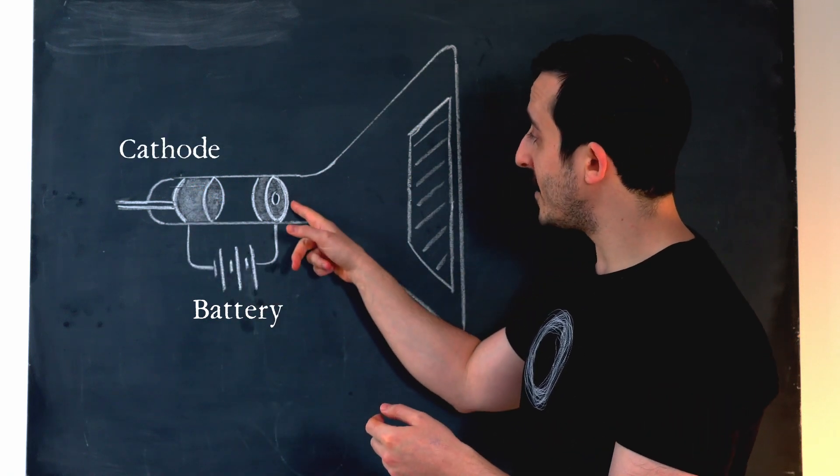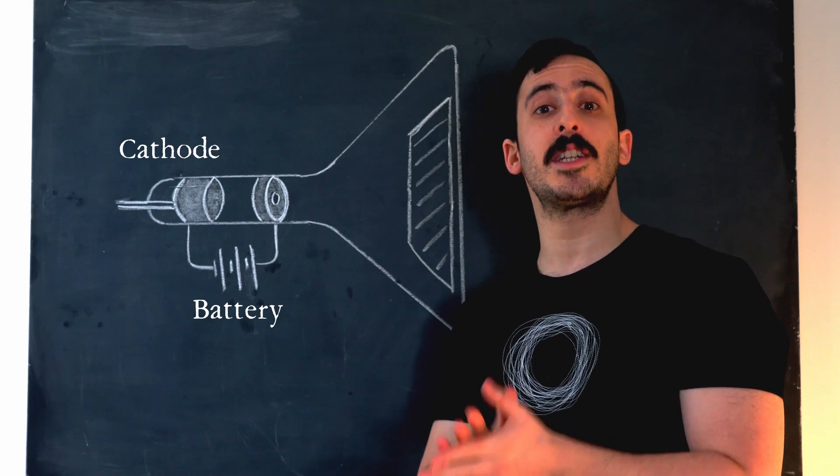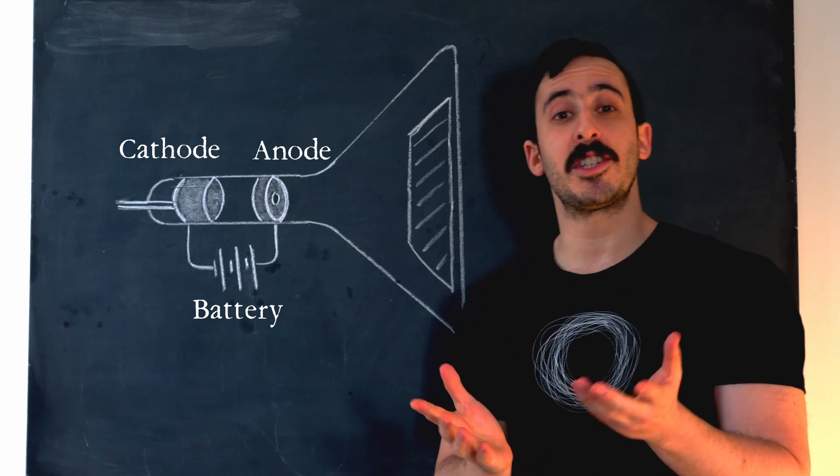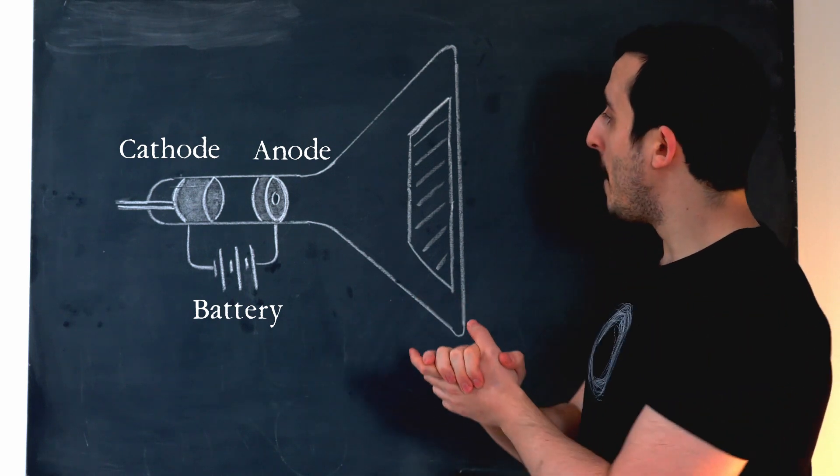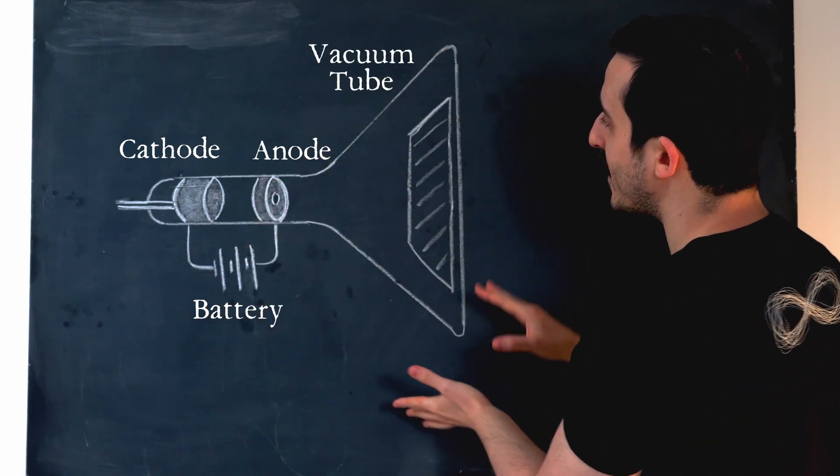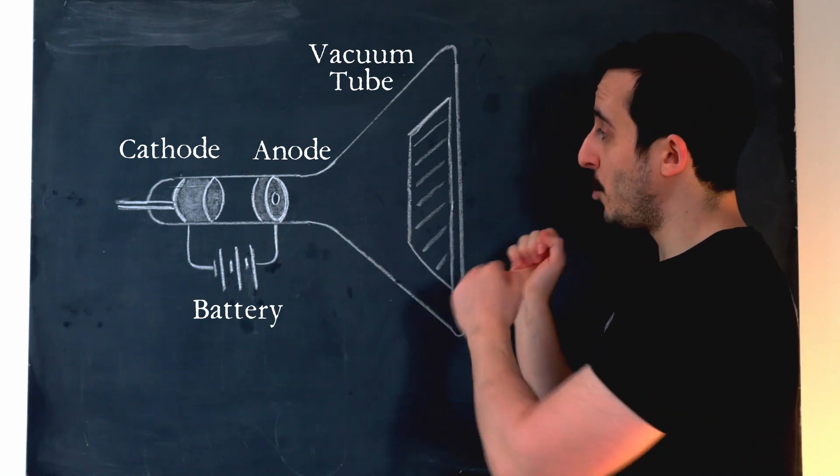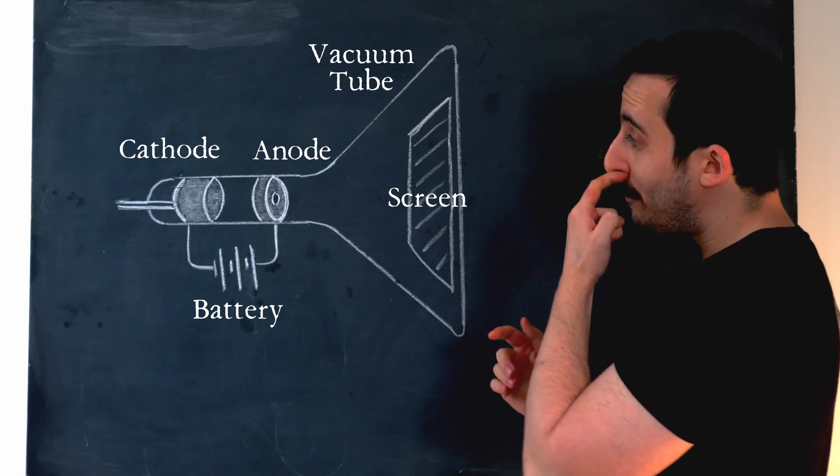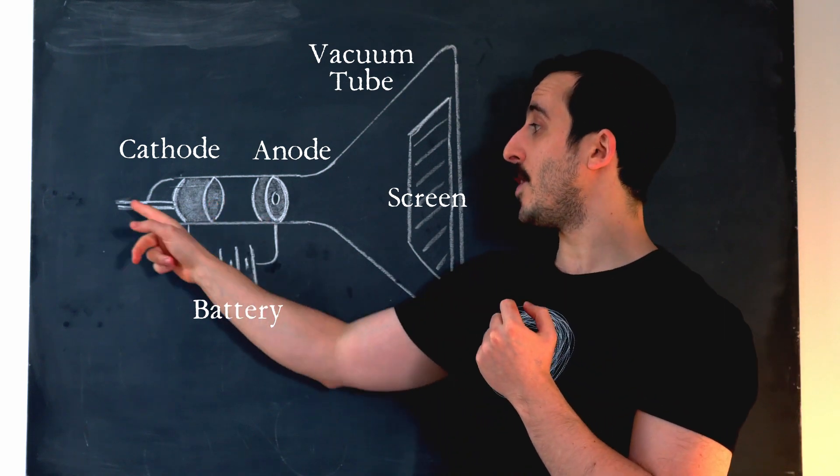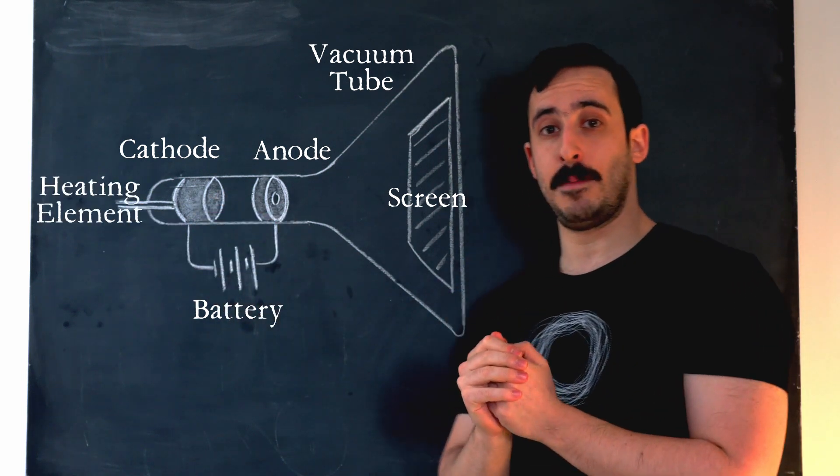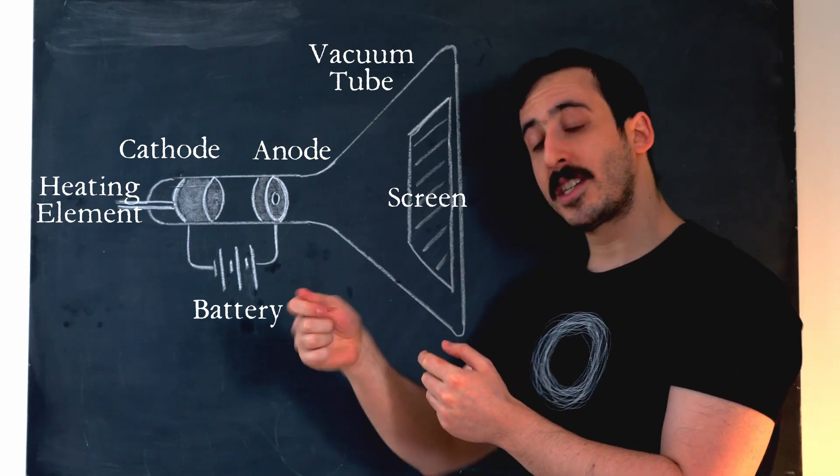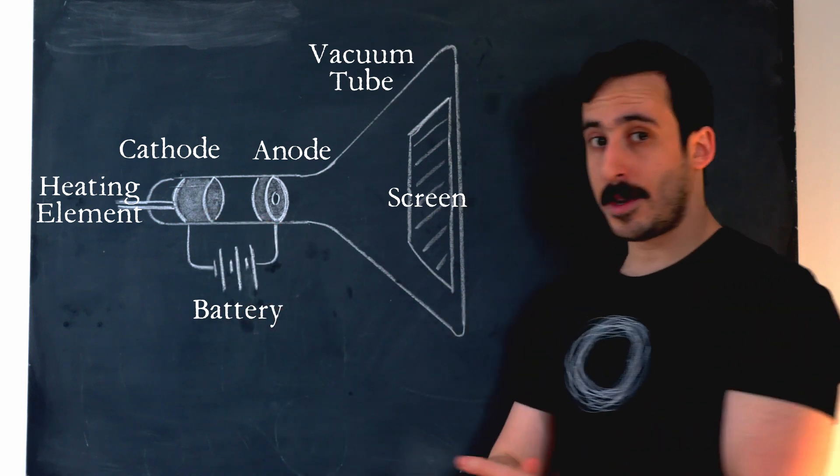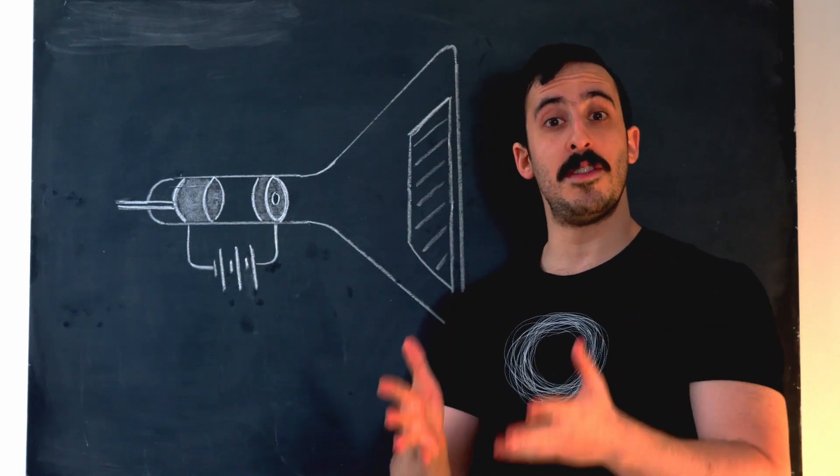The positive end, we connect to this plate that becomes positively charged, we call that the anode. And in the anode, we have an aperture. Now an aperture is just a fancy word for a hole. Then we place this whole thing inside a vacuum tube, so all the air sucked out. And then at this end, we have a phosphor coated screen. And finally, connected to the cathode, we have a variable heating element. That is a heating element which we can turn the voltage up and down on to provide more or less heat to the cathode.